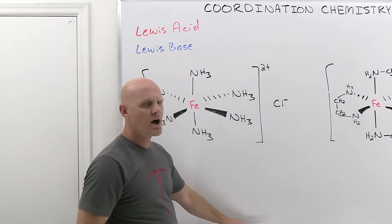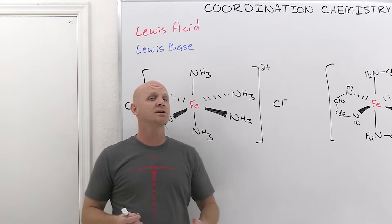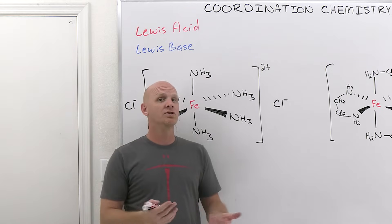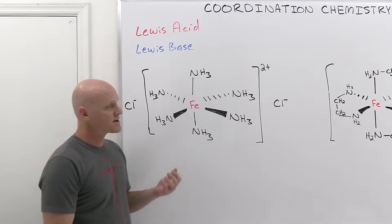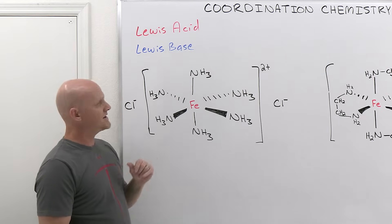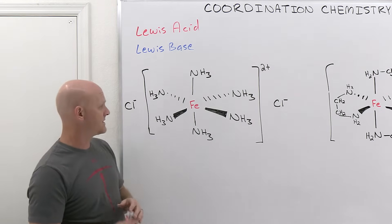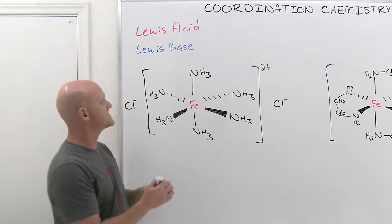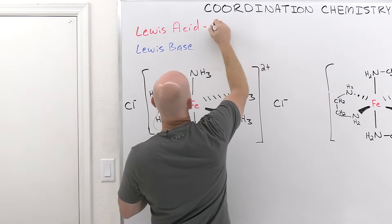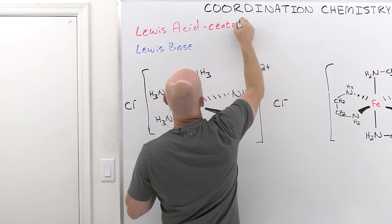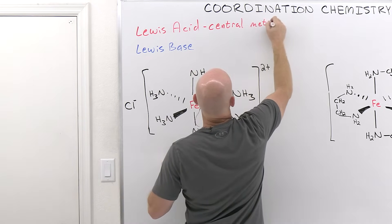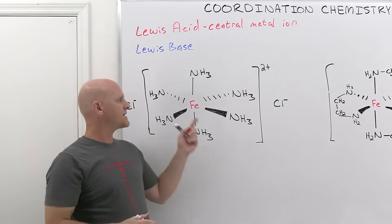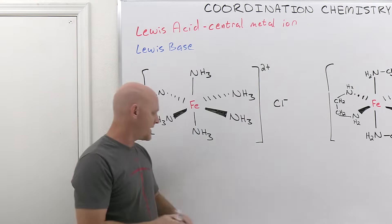The hallmark of a Lewis base is that it has to have a lone pair of electrons to share, and it's going to share that lone pair as a bond with the Lewis acid. In these coordination complexes, you're typically going to see a pattern arise. In the center you're going to have a metal ion — that is the Lewis acid — so we'll call it the central metal ion. Technically, every once in a while you might see a neutral metal, but most of the time it's going to be a metal ion.